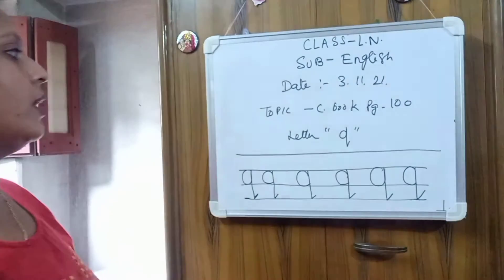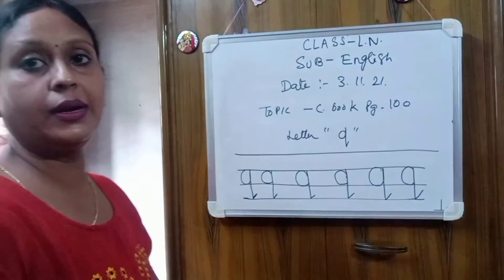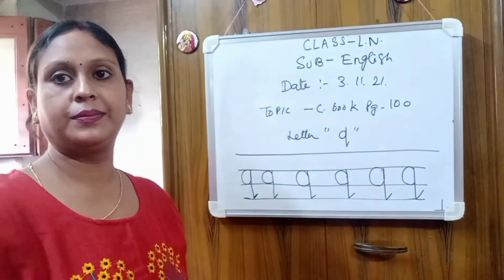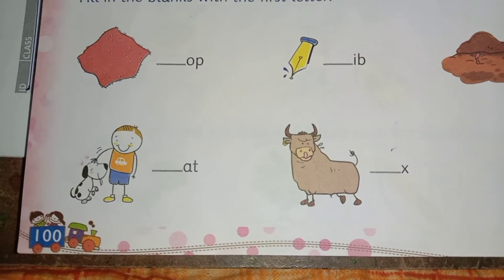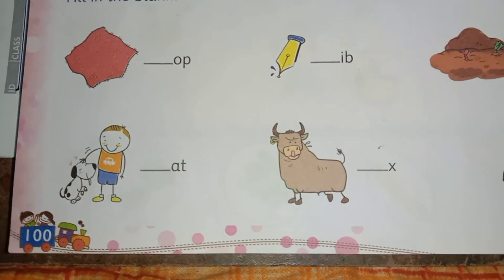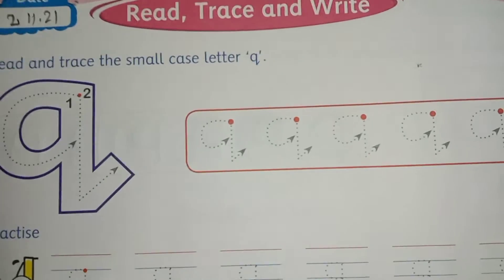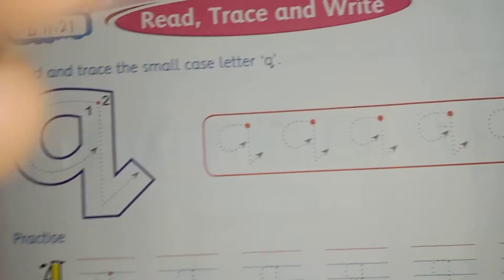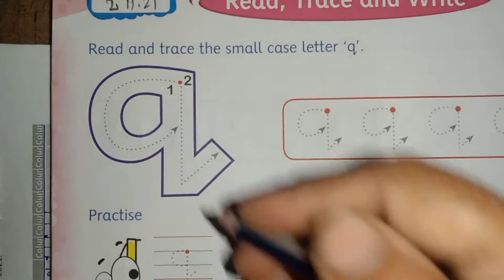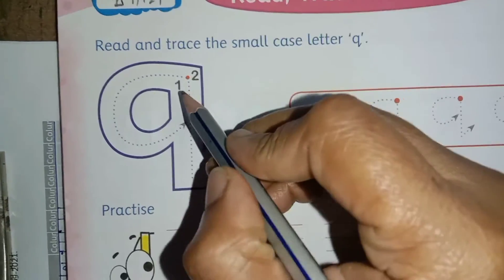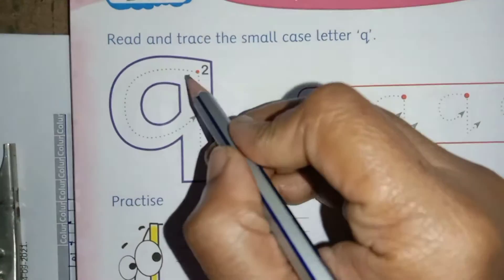Okay children, now take out your book, page number 100. Look children, this is page number 100 of your English course book — letter Q. So today we will write letter Q, small letter Q.